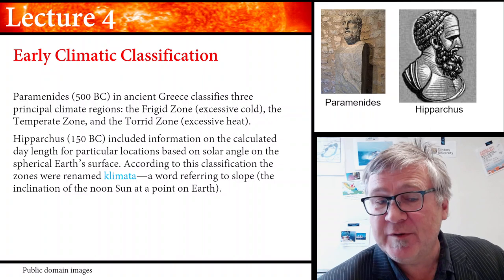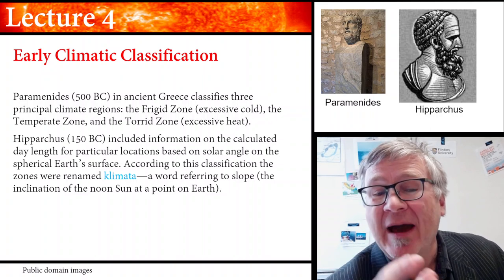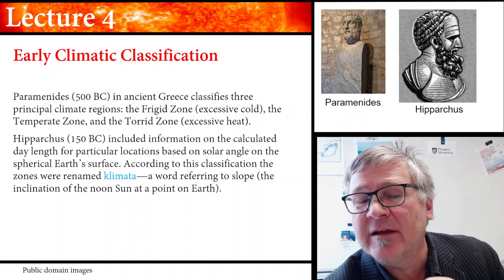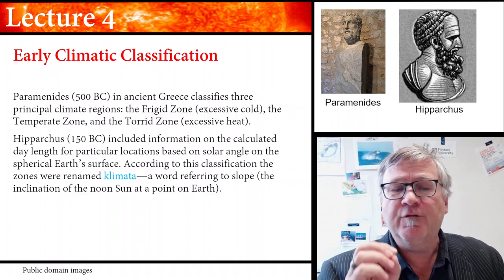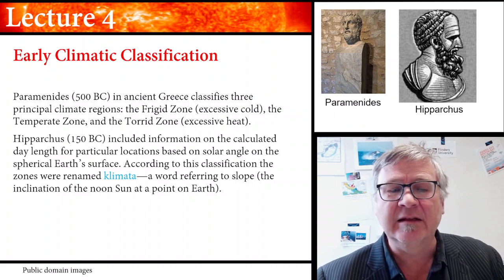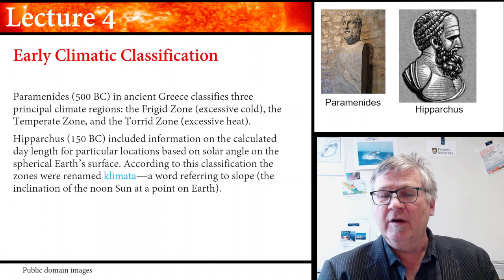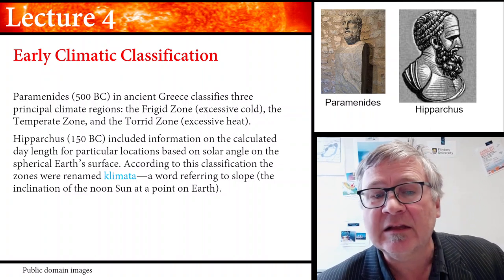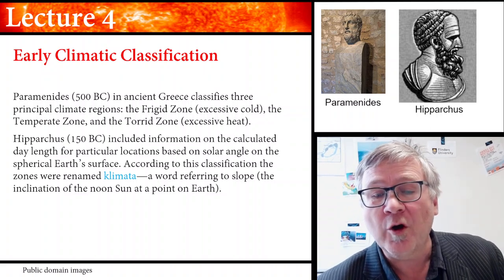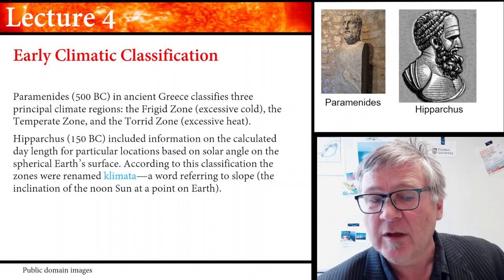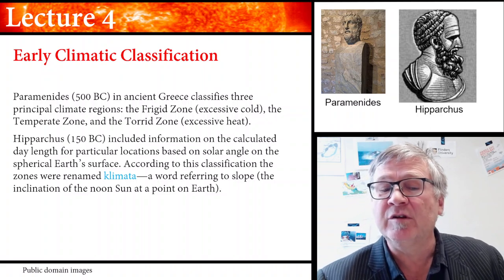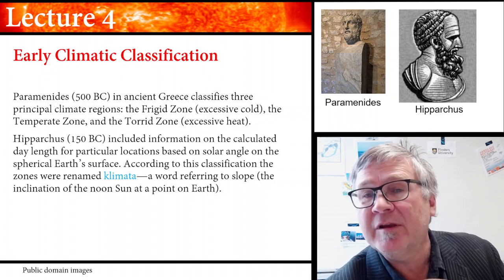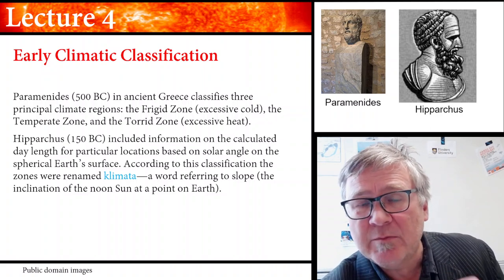In 150 BC, Hipparchus went a step further. He included information on the calculated day length for particular locations based on the solar angle on the spherical Earth's surface. According to this classification, the zones were renamed 'climata,' a word referring to slope, which is the inclination of the noon sun at a point on Earth. So the word 'climate' also goes back many, many years.